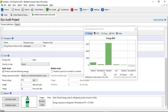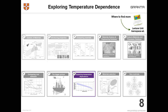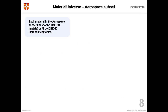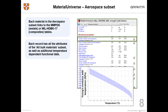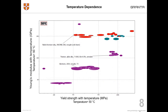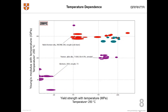On to tip number eight: exploring temperature dependence. Temperature dependent properties are very important for the aerospace industry, and the aerospace edition uses the data from the MMPDS database — industry standard design allowable data. The records have temperature dependent properties. You can view the underlying data as a graph and choose the temperature at which you want the data to show, and then you can use it in selections at that elevated temperature. Here we can see a chart of Young's modulus against yield strength at different temperatures, and you can see how the properties change with changing temperature.